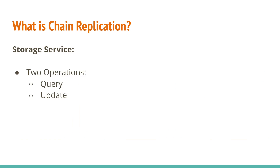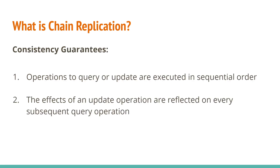A storage service supports two operations. The first is a query operation, which returns a value derived from a single object, and a programmable update operation that atomically changes an object. Unlike most other solutions with high availability and throughput, Chain Replication offers strong consistency guarantees. These are: one, operations that query or update are executed in sequential order; and two, the effects of an update operation are reflected on every subsequent query operation. These guarantees are mandatory for some applications, but when they're not, they still significantly simplify the implementation.